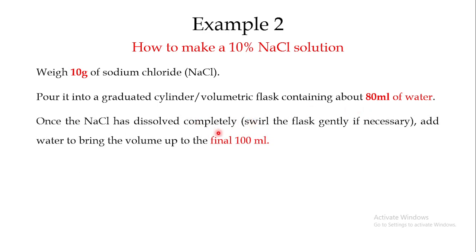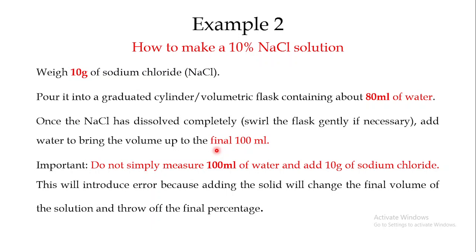Next, dissolve the sodium chloride completely in the water — swirling if necessary. When completely dissolved, bring the volume up to 100 ml. Do not simply measure 100 ml of water and add 10 grams of sodium chloride, as this will introduce error because adding the solute will change the final volume. Instead, dissolve the solute in 80 ml of water first, then make the final volume up to 100 ml after complete dissolution.